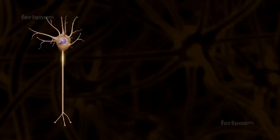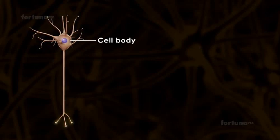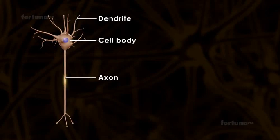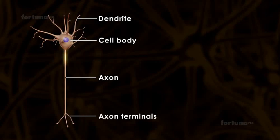Typically there are four parts in a neuron: the cell body, the dendrites, an axon, and the axon terminals.